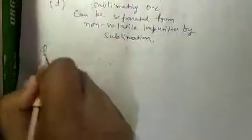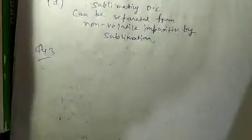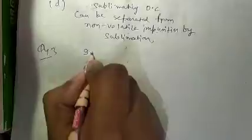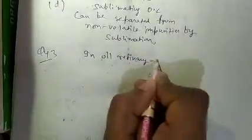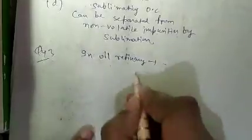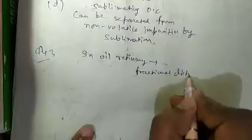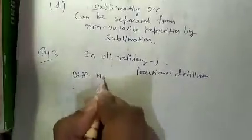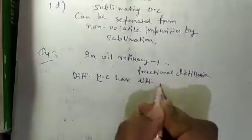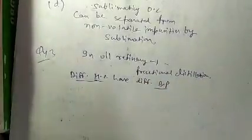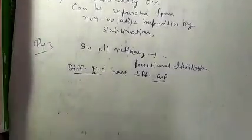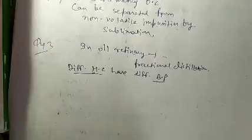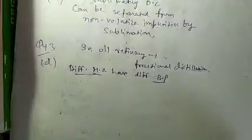In question number 43, fractional distillation is discussed in context of oil refineries. Fractional distillation is used in oil refineries because different hydrocarbons have different boiling points. Products like petroleum, coal tar, and crude oil fractions are all separated by fractional distillation. So question number 43 option D is correct.